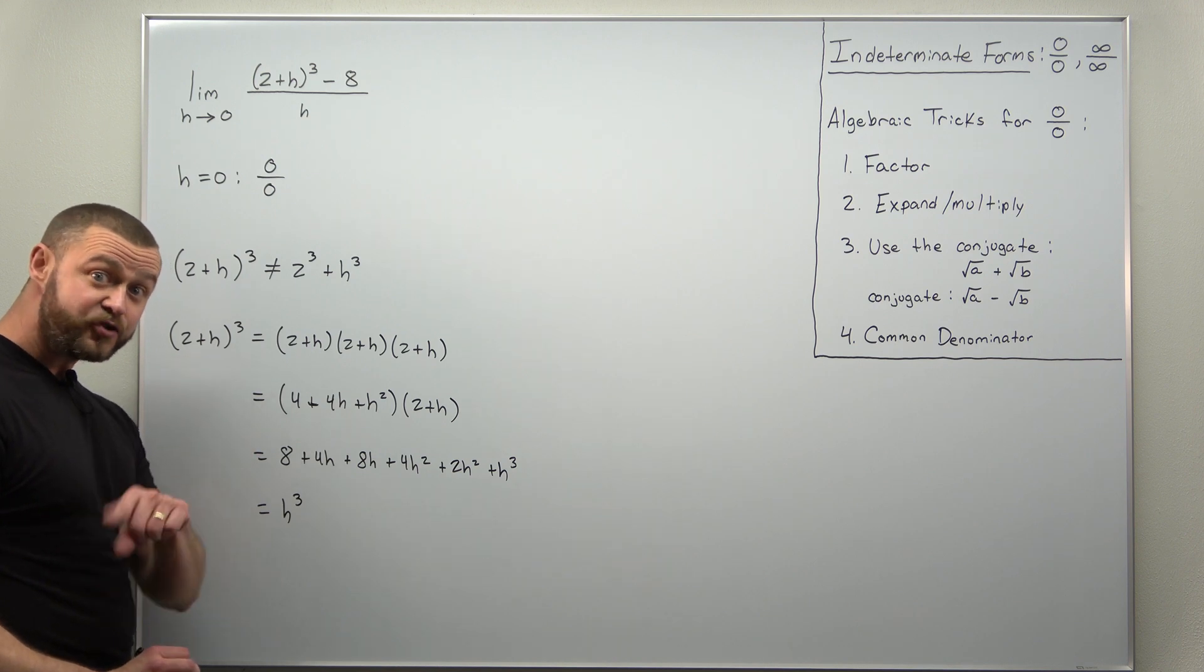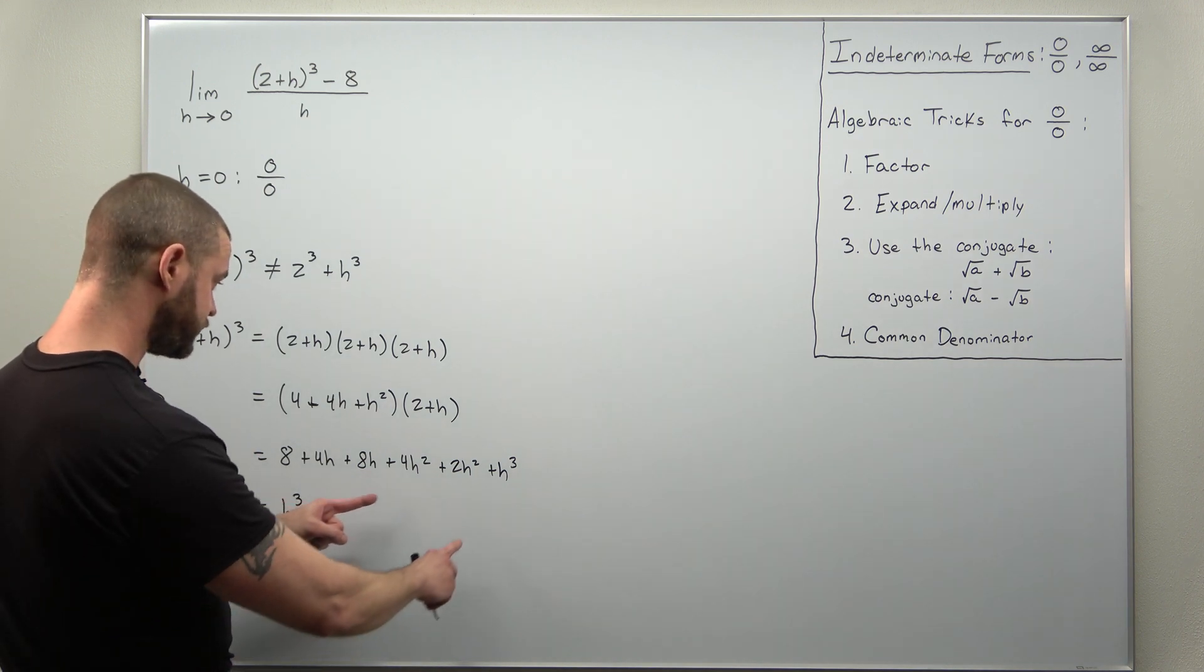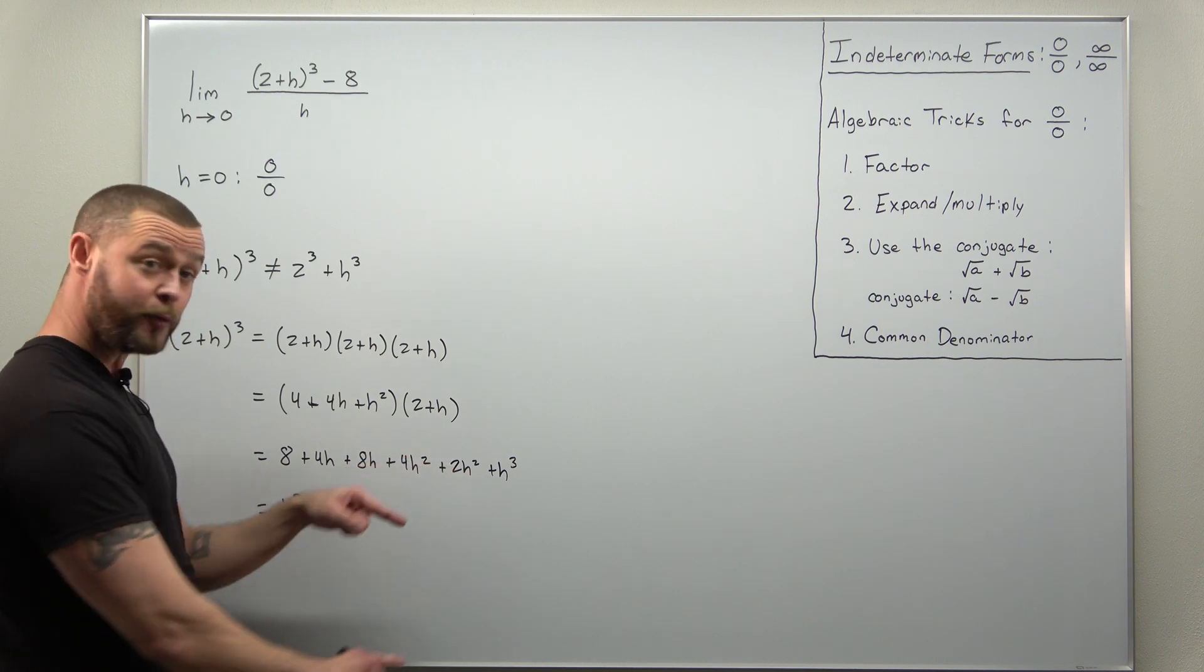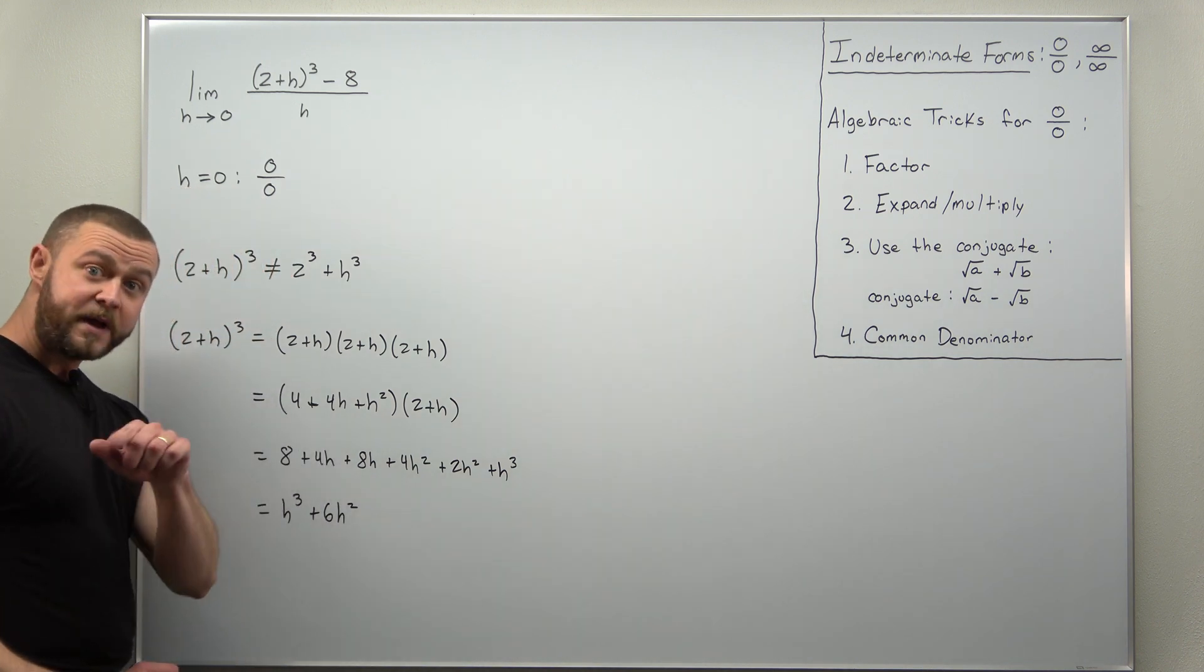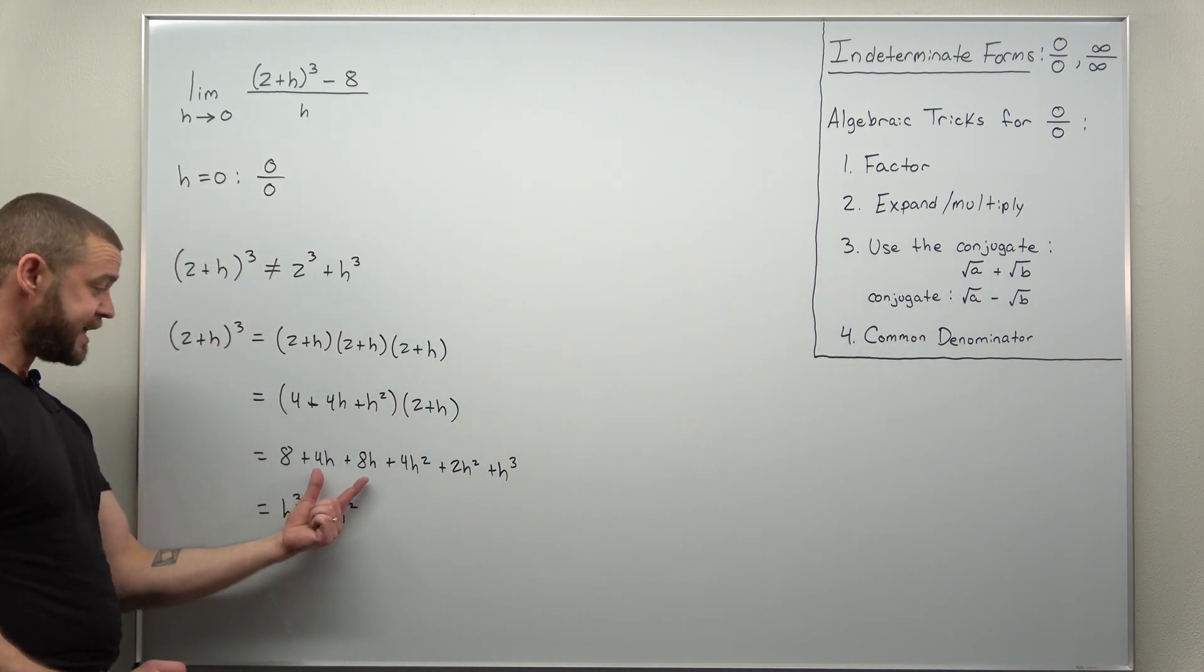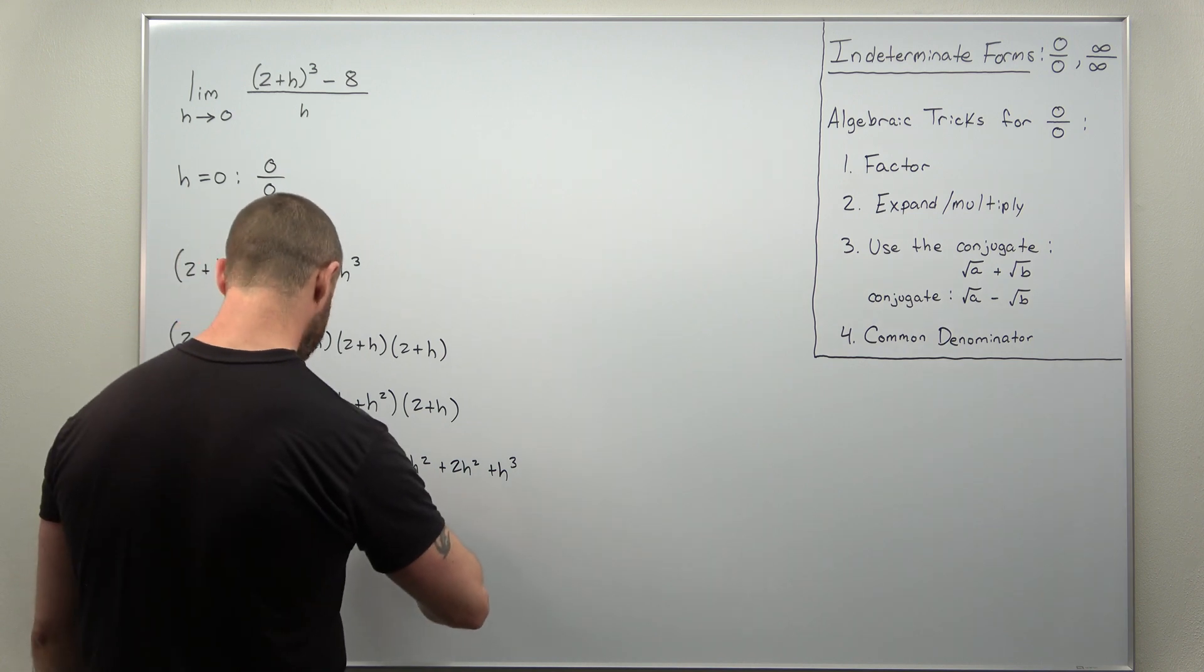All right, we're going to look for h² terms. We have two there: 4h² and 2h². You can add them as 6h². We have h terms: 4h and 8h. That'll combine to 12h.